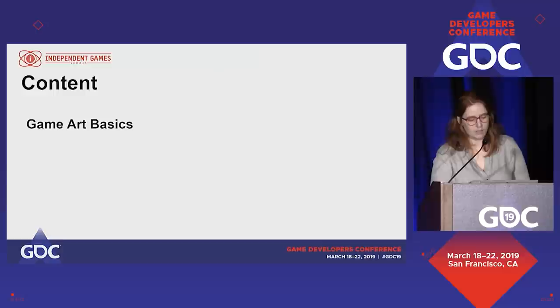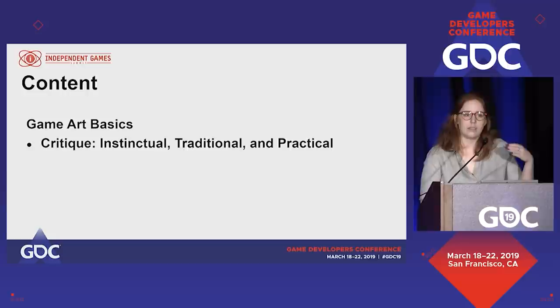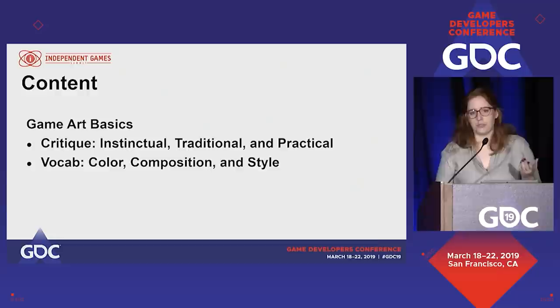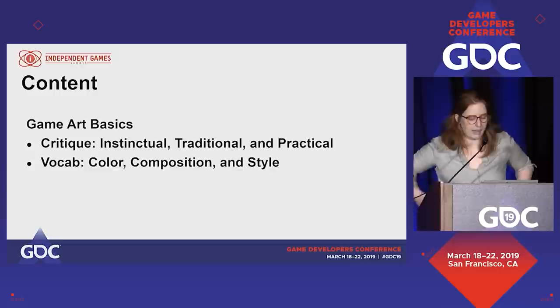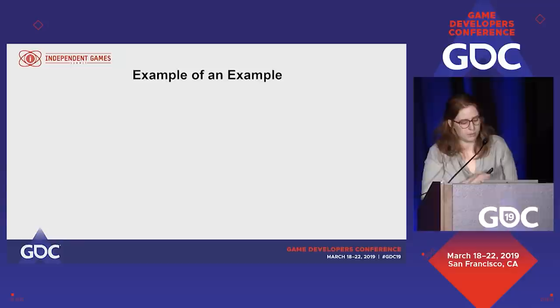We're going to talk about critique, the way we can treat things instinctually, and some ways that we can do it traditionally and apply that to practical game critique. I'm also going to talk about vocabulary, probably terms you've heard but maybe haven't thought about as well as you could have. So we're going to go over some examples. Let's start with an example of an example.